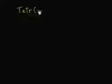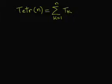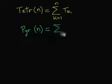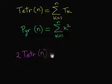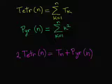Let us denote the n-th tetrahedral number by tetrahedron n equal sigma from k equal to 1 to n of T sub k, and the n-th pyramidal number by pyramidal n equal sigma from k equal to 1 until n of k square. Then we can translate our prior relation to 2 times tetrah of n equal to the triangular number T-sub-n plus the pyramidal number n.